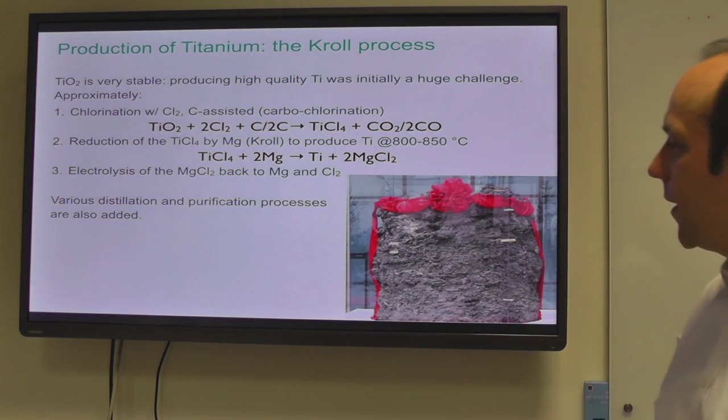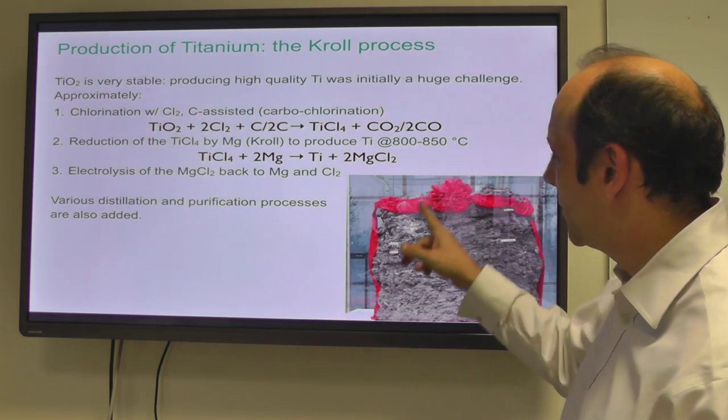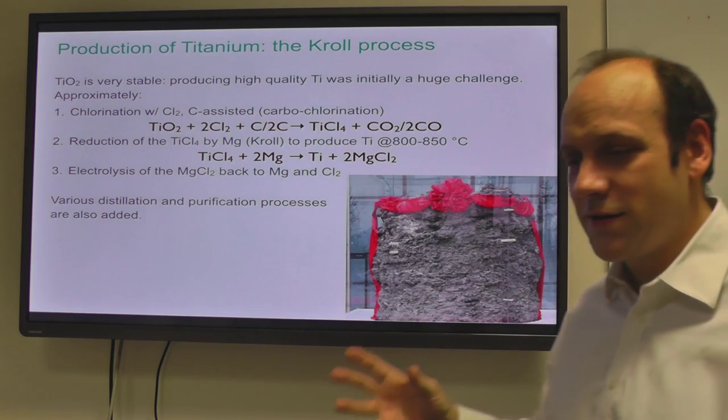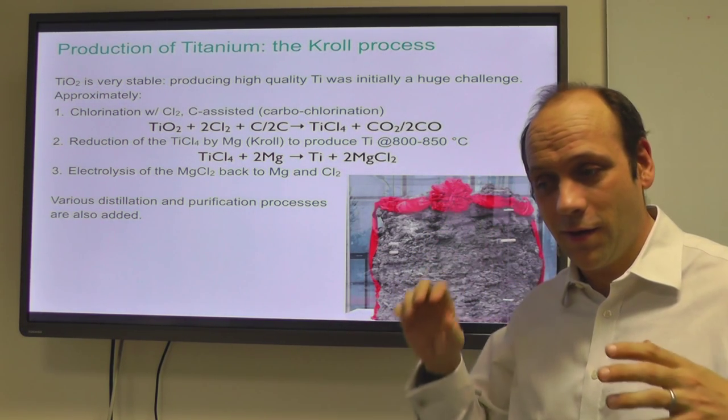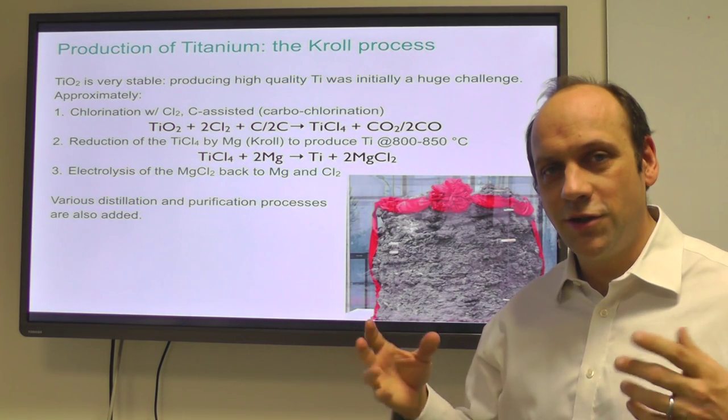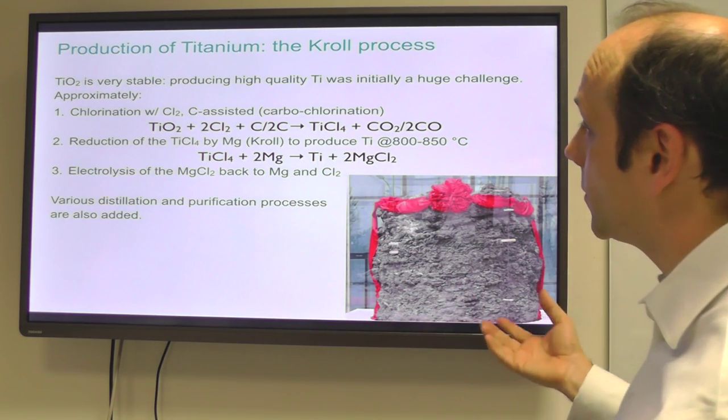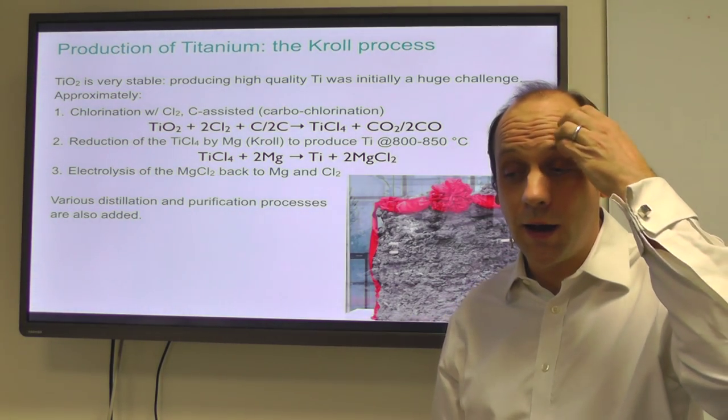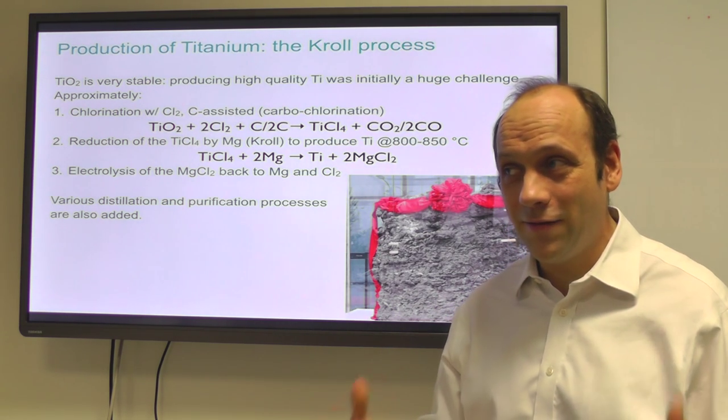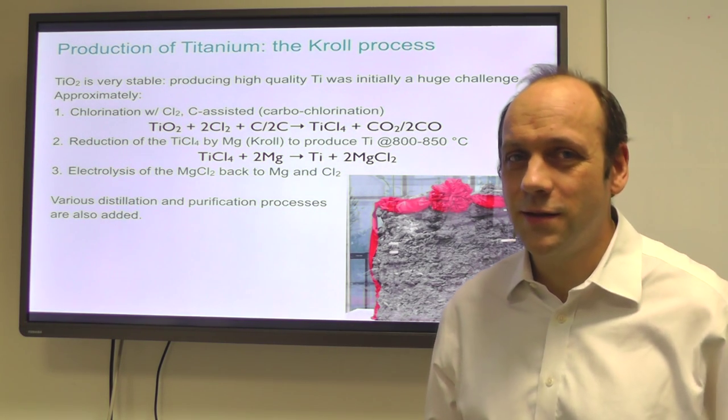Thinking about how we make titanium, this is a very large bit of sponge out of a reactor at the World Conference on Titanium. The big problem with titanium is that TiO2, the mineral we use, the oxide we use, is very stable. So producing high-quality titanium is a huge challenge that wasn't really solved until the 1950s or 60s. Titanium metallurgy is a young field, only really invented in the 60s.